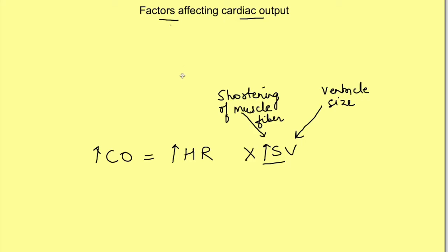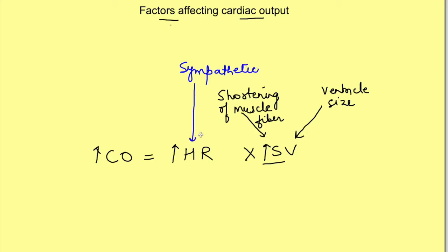First we will see two limbs of the autonomic nervous system. First is sympathetic activity. Increase in sympathetic activity leads to both increase in heart rate as well as causes increase in the stroke volume by causing increase in the shortening of the muscle fiber.